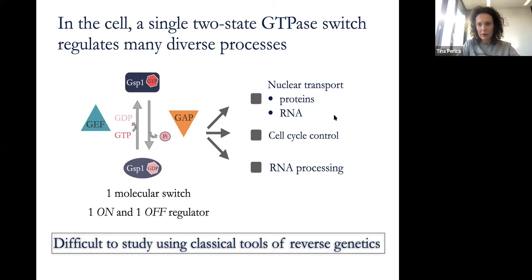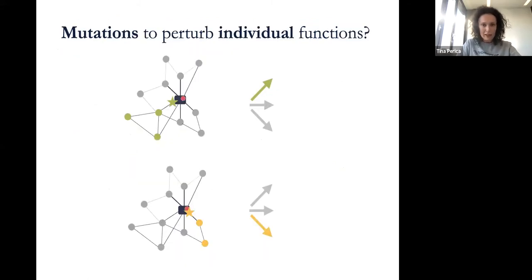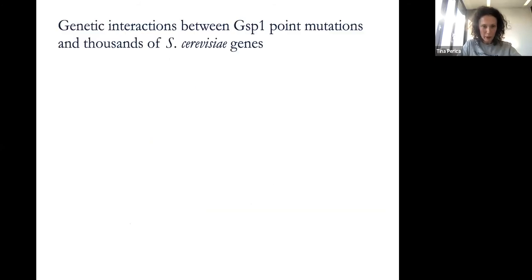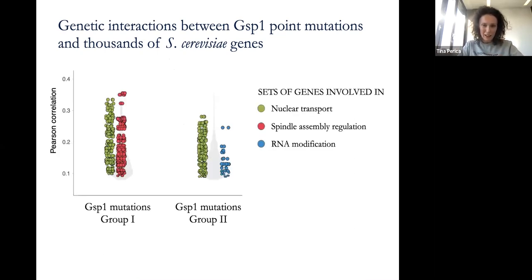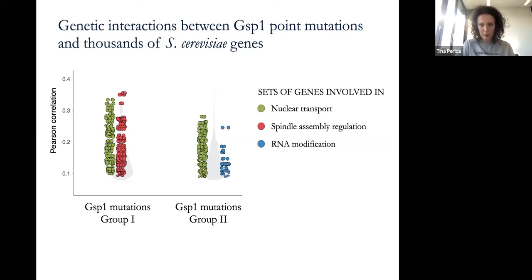It's normally very difficult to study such proteins with classical tools of reverse genetics, because if you delete such a gene you've deleted all of its functions at once. My idea was to make mutations that perturb individual functions of this protein and study them one at a time — to deconvolute how one two-state switch can regulate so many things in the cell simultaneously. I made point mutations in the interfaces of this small GTPase and then did extensive proteomics and genetic interaction screens.